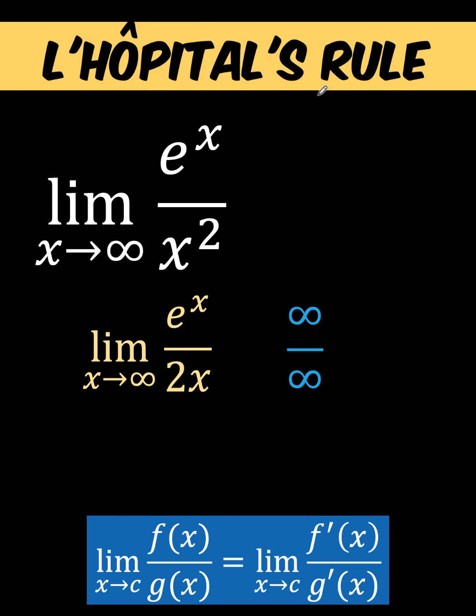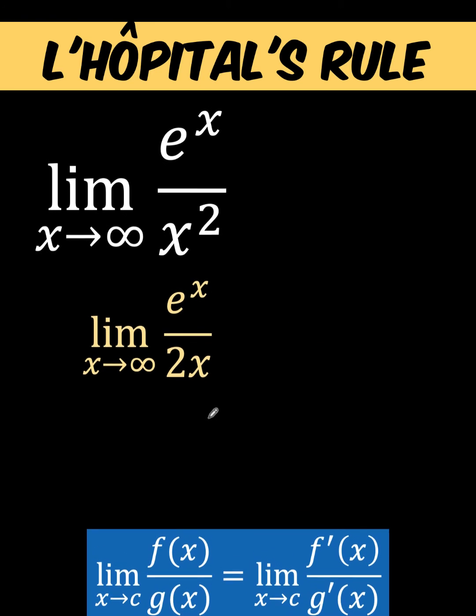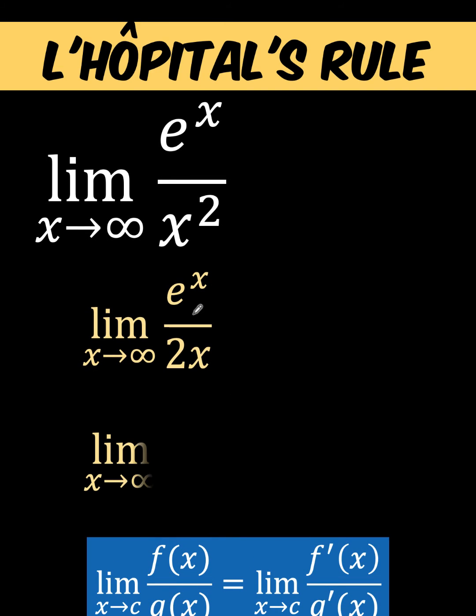Now, the beauty of L'Hôpital's rule is that we can apply the same rule on this result again. And so we take again the derivative of e to the x, which is itself, and the derivative of 2x, which is 2, and substituting infinity to x, we now have infinity for e raised to infinity over the constant 2, which is equal to infinity.